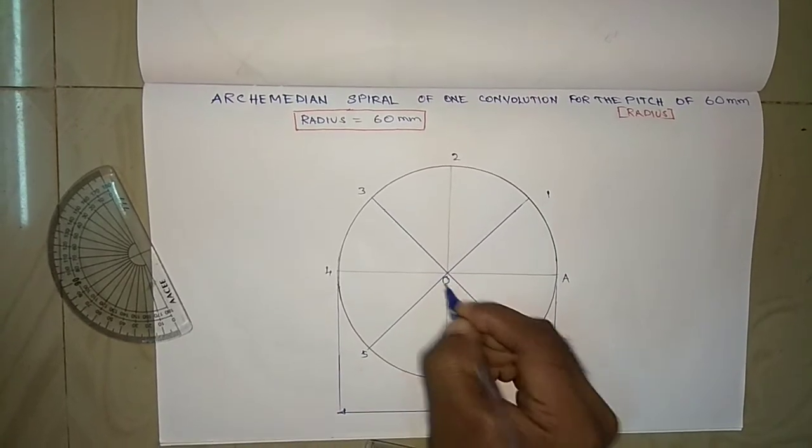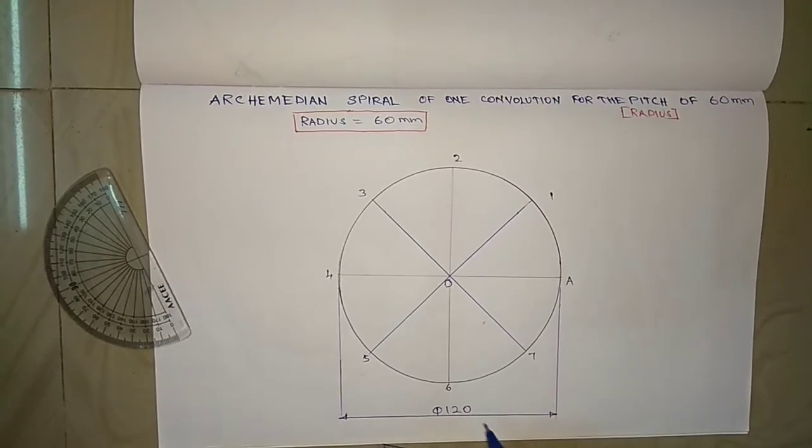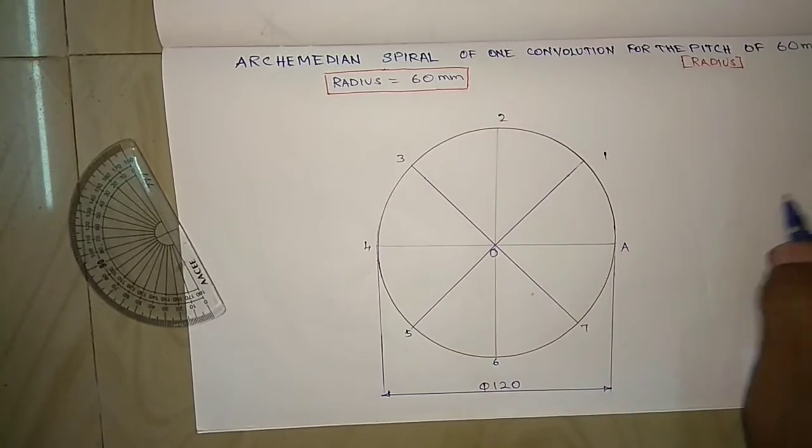O is the center point of the circle. Then we have to ensure that OI is 120, because the radius is 60.